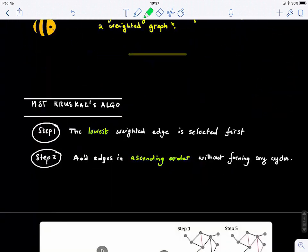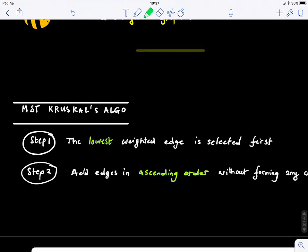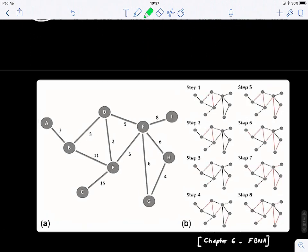So here step one is, this is the MST Kruskal's algorithm. So first we need to select the lowest weighted edge, and then add edges in ascending order without forming any cycles. So this is how it works here.